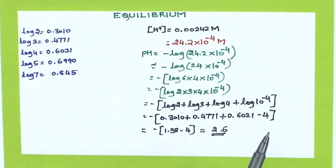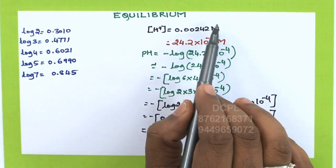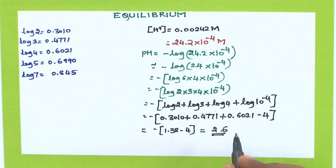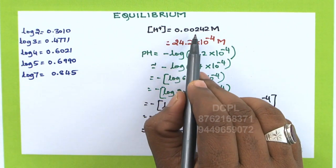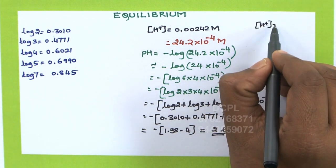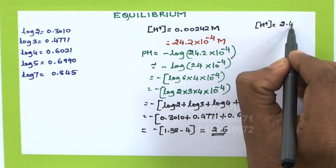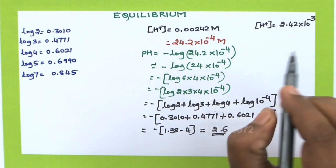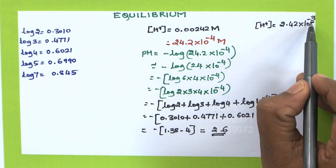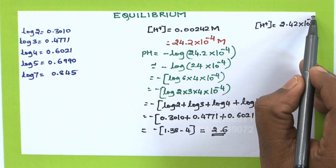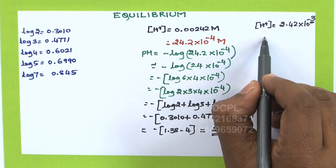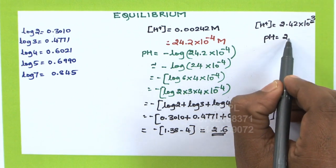You can directly predict the pH by looking at the concentration given. To predict, shift the decimal after one digit. For example, if the concentration is 0.00242 molar, write it as 2.42 × 10⁻³. After shifting the decimal after one digit, whatever power you get — neglect the minus — the pH will be slightly less than that power. So if the power is 10⁻³, the pH will lie in the range of 2 to 3.